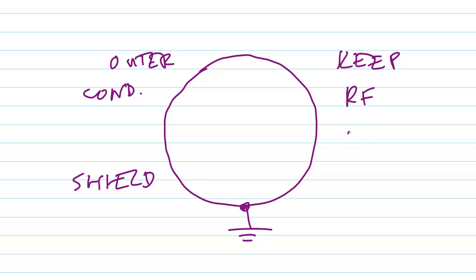That's the outer conductor, also known as the shield, because it is normally connected to ground and serves to keep RF in or out of the interior region. It's almost like one great big Faraday cage.